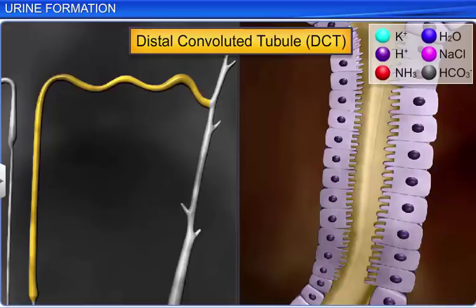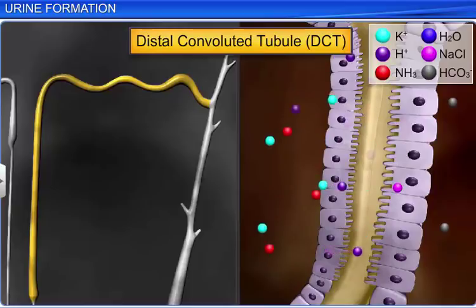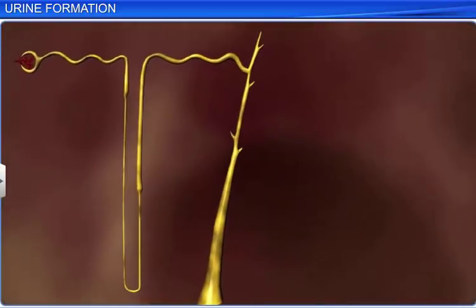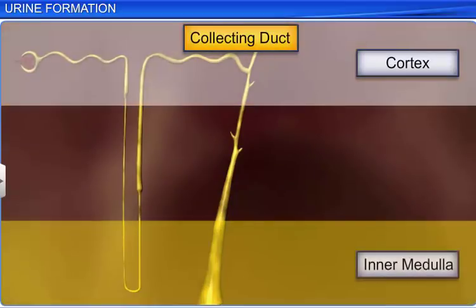This region helps maintain the sodium-potassium balance and pH level in the blood, by reabsorbing bicarbonate and selectively secreting potassium and hydrogen ions and ammonia. The distal convoluted tubules of several nephrons open into a straight tube called the collecting duct, which extends from the cortex of the kidney to the inner parts of the medulla.